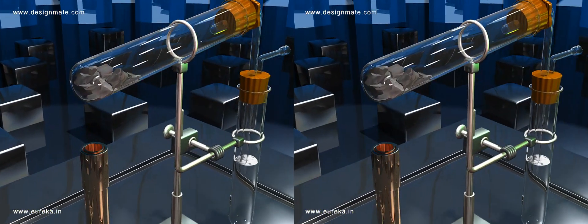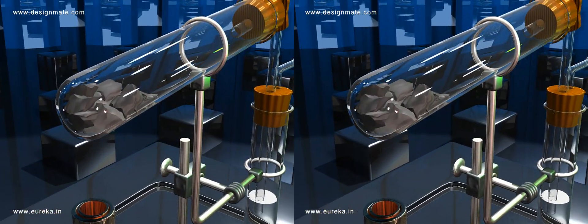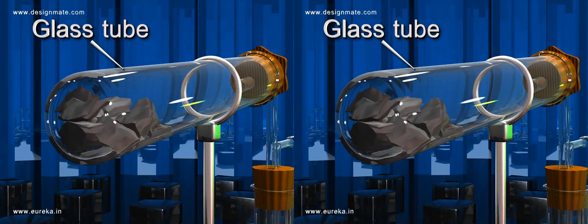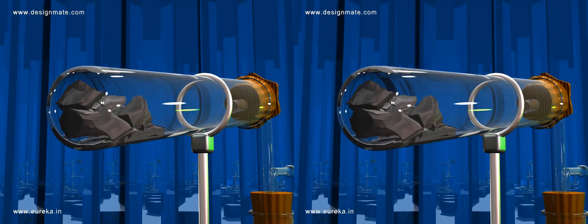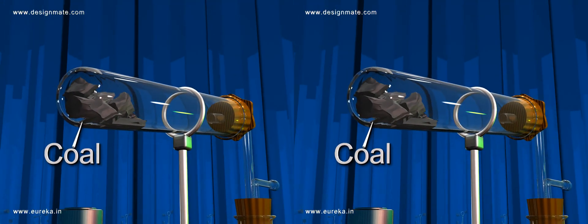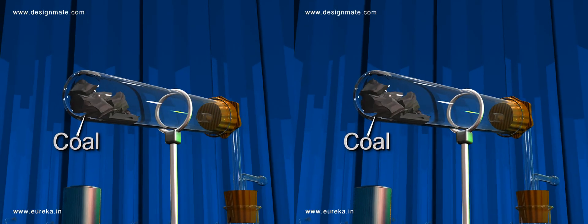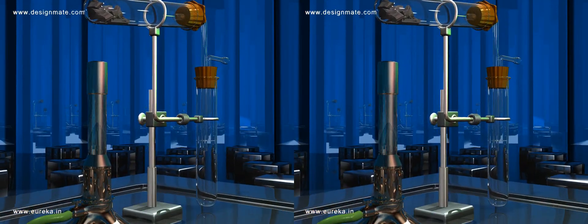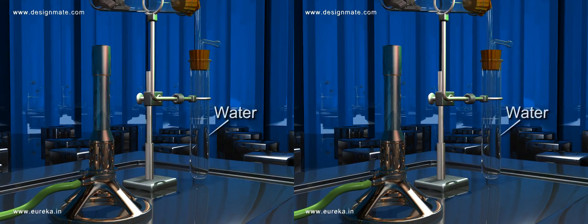Arrange the apparatus as shown. The horizontal glass tube contains some crushed pieces of coal, while the vertical glass tube is filled with some amount of water.